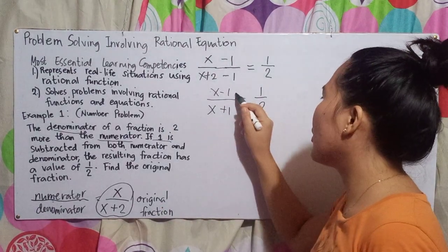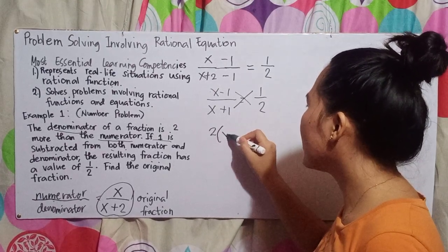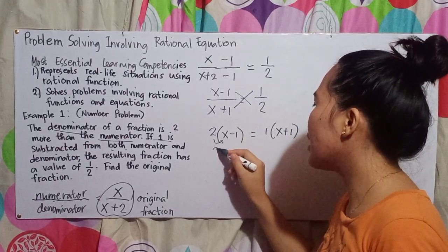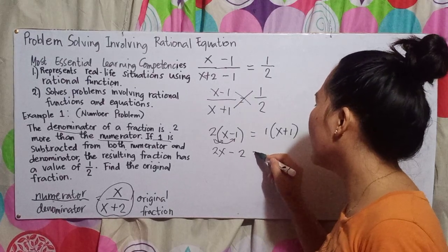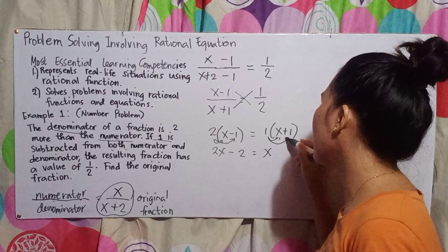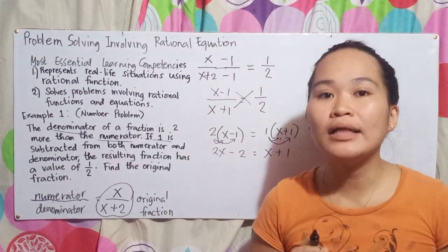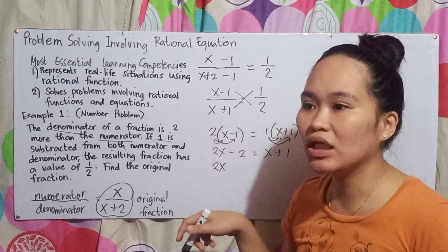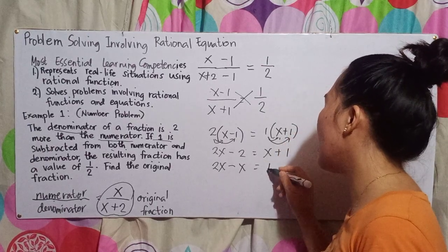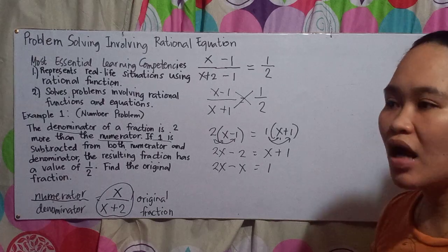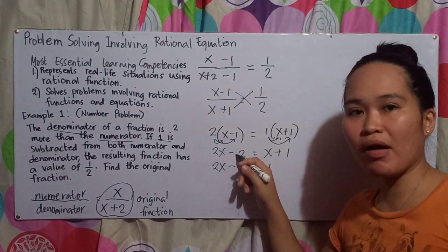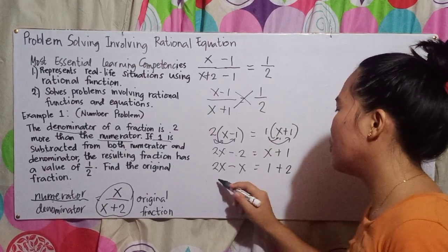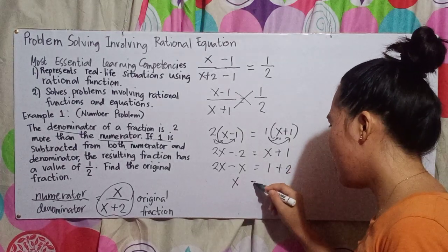Since there are two terms, we can cross-multiply. So: 2 times (x minus 1) equals 1 times (x plus 1). Distributing: 2 times x is 2x, 2 times negative 1 is negative 2. 1 times x is x, 1 times positive 1 is positive 1. Combining like terms: copy 2x. Moving positive x to the left side changes it to negative x. Copy 1, and moving negative 2 to the right side changes it to positive 2. So x equals 3.